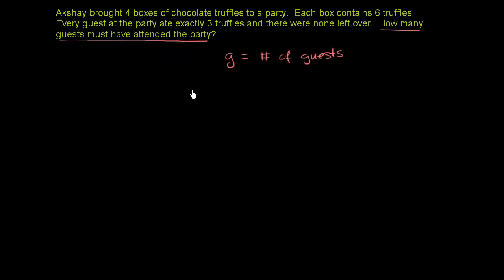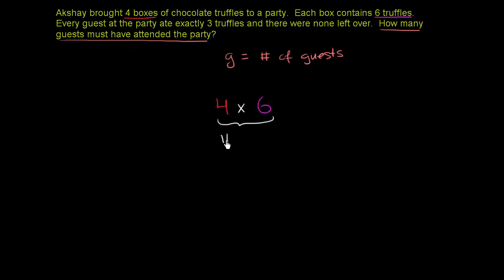We can set up a relation between the number of guests, the number of truffles each guest ate, and the total number of chocolates. What was the total number of chocolates at this party? He bought four boxes, and each box contains six truffles, so the total number of chocolates must have been four times six. This is the total number of truffles.